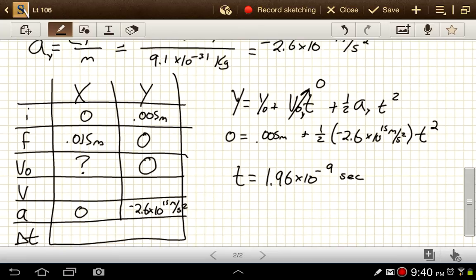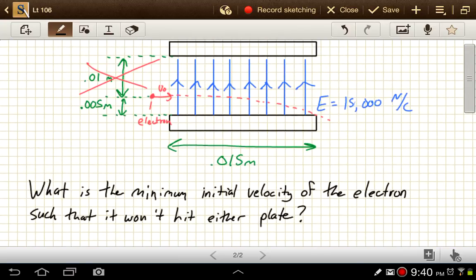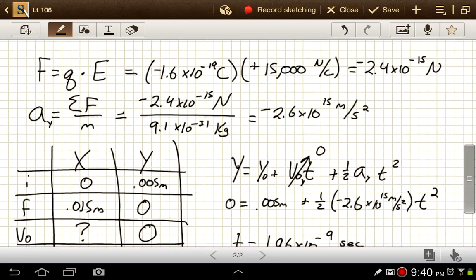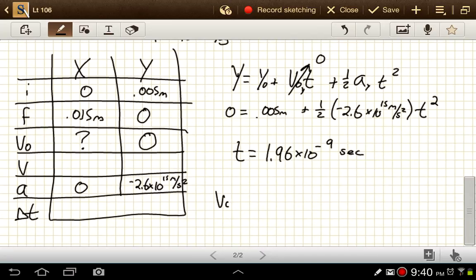And then with that information, we can figure out, okay, we know how far in the x direction it has to go, how much time it has to do it, and the fact that it's going to be traveling at a constant speed in the x direction because acceleration is zero. So now just velocity in the x is going to be equal to that 0.015 meters divided by the 1.96 times 10 to the negative 9th seconds, which gives us a velocity of 7.6 times 10 to the 6th meters per second.